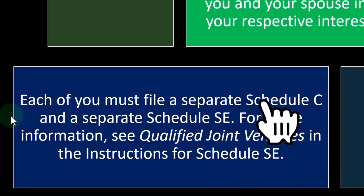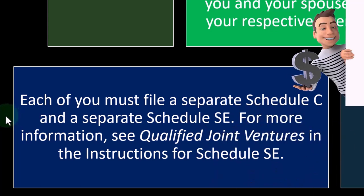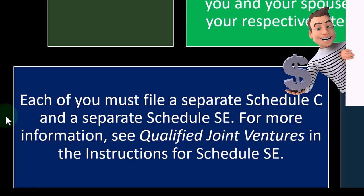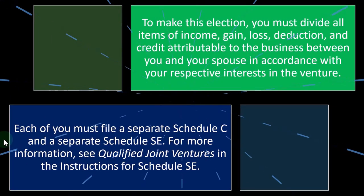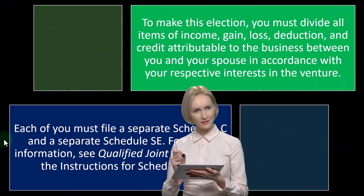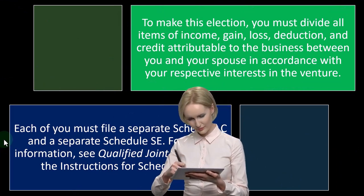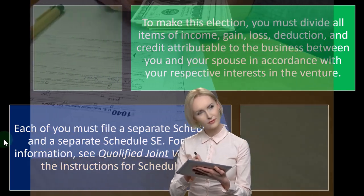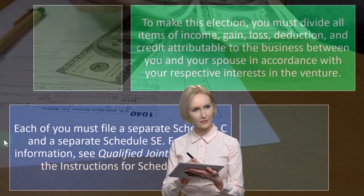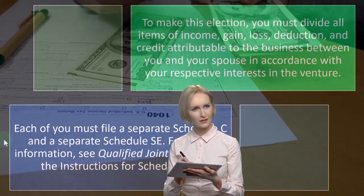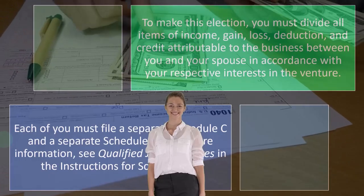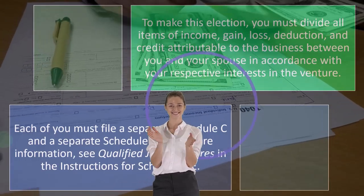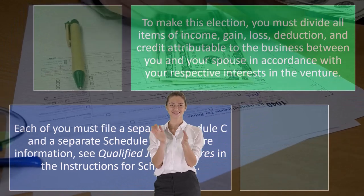Each spouse must file a separate Schedule C and a separate Schedule SE. That's a bit tedious, but it may still be easier than filing a full partnership return — Form 1065. For more information, see qualified joint ventures in the instructions for Schedule SE, which covers the self-employment tax.